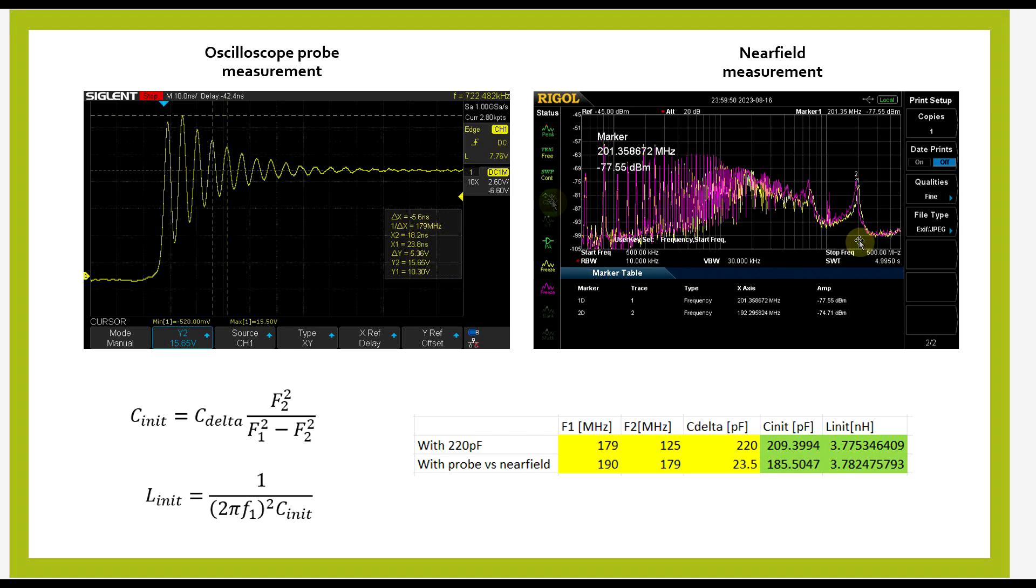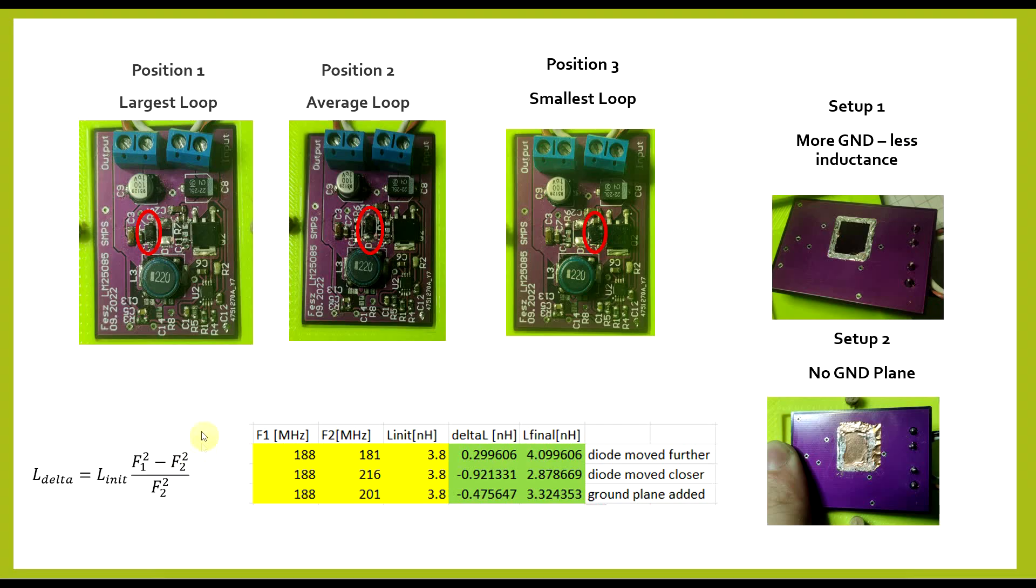and knowing that the oscilloscope probe has around 23 pF, we can finally determine that the circuit has 185 pF of parasitic capacitance and the 3.8 nH that we had before. So our frequency difference in between the two measurements was this non-negligible amount from the oscilloscope probe. With a lower capacitance probe, then we shouldn't get such large differences.